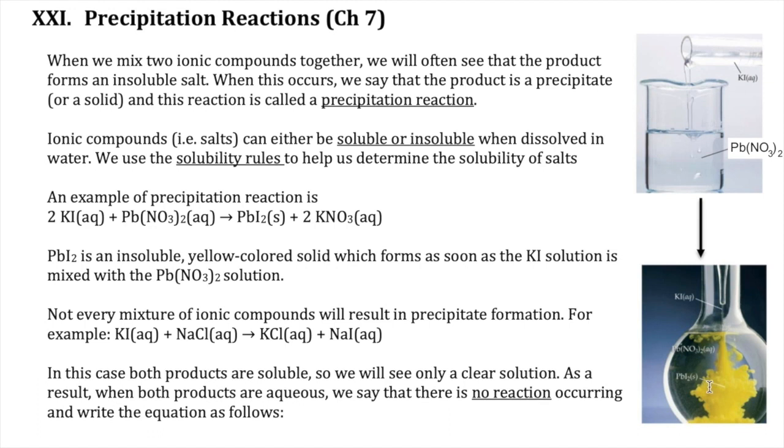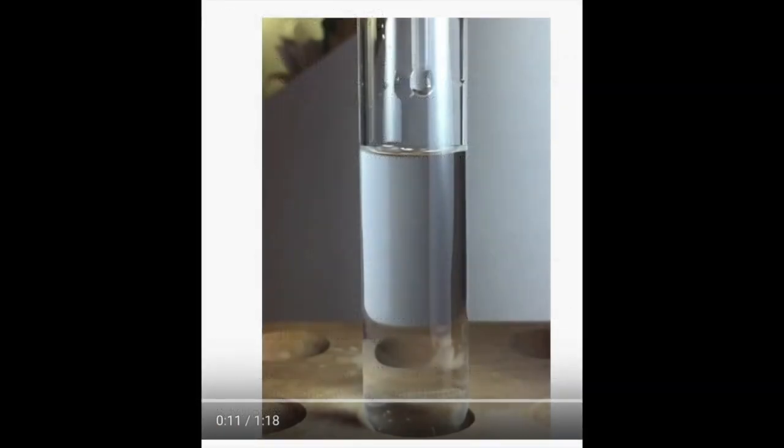The precipitate, or solid, is preventing you from seeing through the solution because solid particles are densely packed together. Here's a video that illustrates the moment that KI is added to Pb(NO3)2 and the formation of the precipitate.